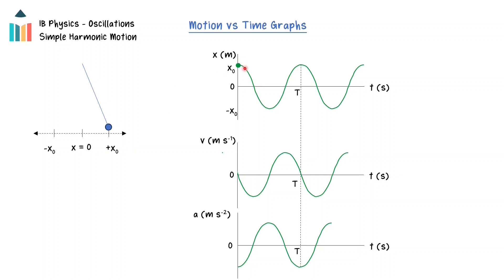At the maximum displacement, the velocity of the object will be zero meters per second, so the velocity time graph will start at a velocity of zero. According to the rules of simple harmonic motion, the acceleration is directly proportional to the displacement and points in the opposite direction towards the equilibrium position. So if the displacement time graph starts at the positive maximum, the acceleration time graph will start at a maximum but in the negative direction.